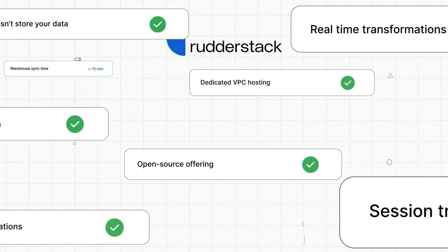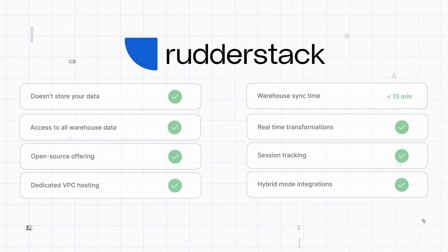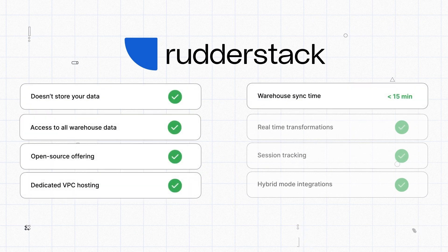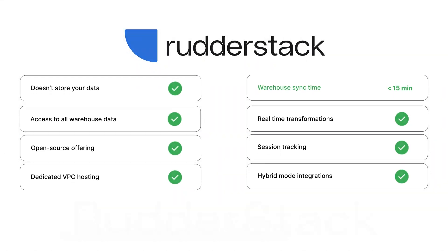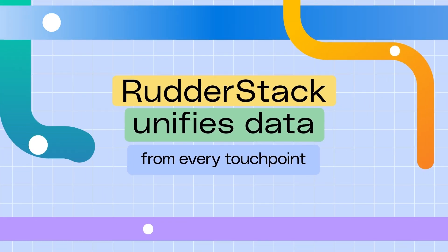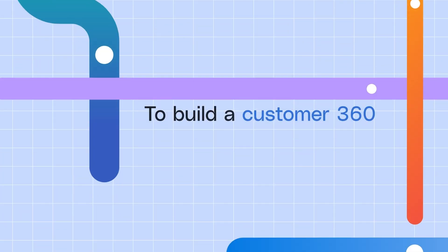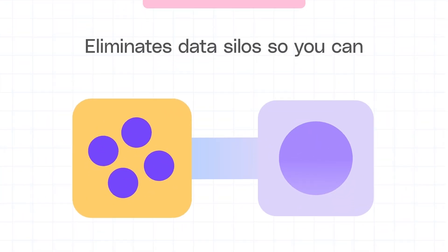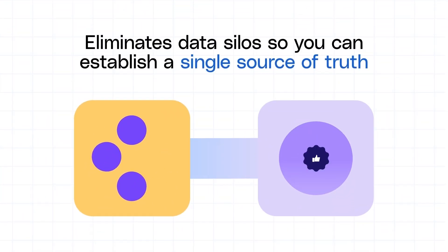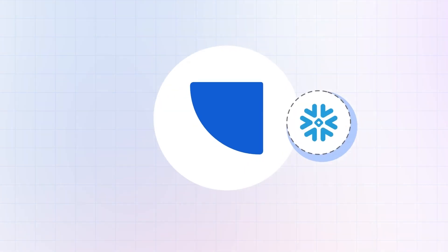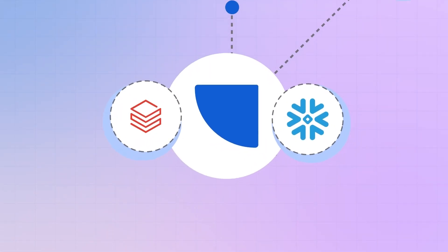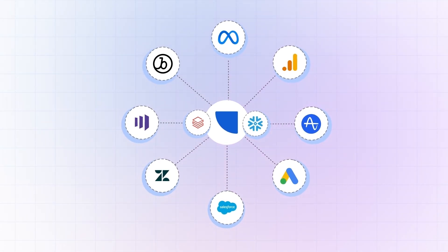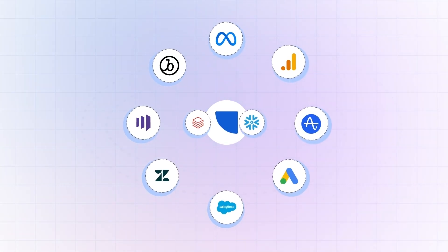Rudderstack is open source, ad-block resilient, and enables you to transform your data in real time to fix bad data and customize integrations. Rudderstack unifies data from every touchpoint to build a customer 360 in your data warehouse or data lake. Our approach eliminates data silos so you can establish a single source of truth and seamlessly deliver rich customer profiles to every team in the tools they use.